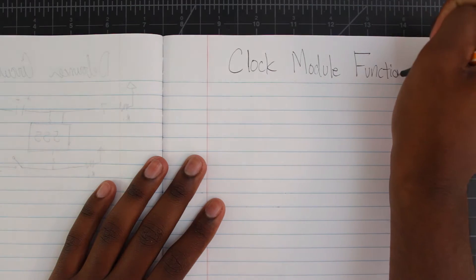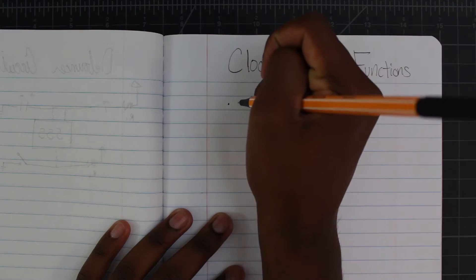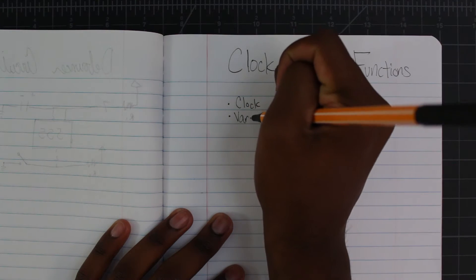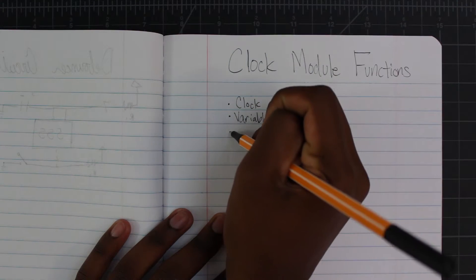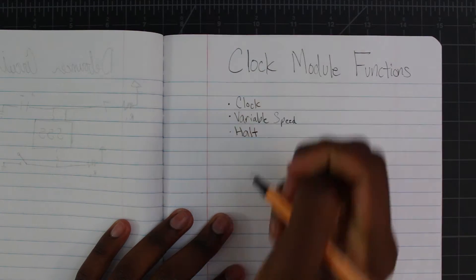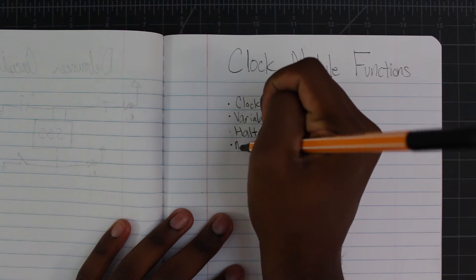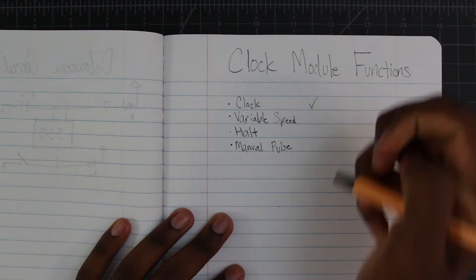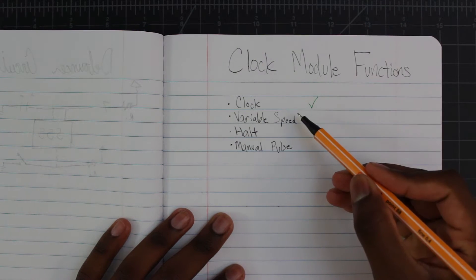So I want to add some functionality today. I'm going to create a clock module that can do the following things: clock obviously, but we also want to have a little bit of speed control so variable speed. Next, we want to be able to halt or stop the clock. And lastly, we want to be able to manually advance the clock. We can redo the first one here, but today and in part 2 of this video, we're going to work on getting the rest of this functionality.